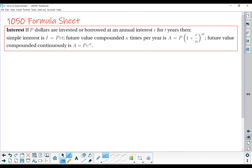For our next few topics, we're going to need some formulas from our 1050 formula sheet. On the formula sheet, you should notice a section where it says interest. If P dollars are invested or borrowed at an annual interest rate R for T years, then the simple interest is I equals PRT. The future value compounded N times per year is A equals P times 1 plus R over N to the NT power. And then in a minute, we'll use this future value compounded continuously, A equals PE to the RT. That is on your formula sheet.